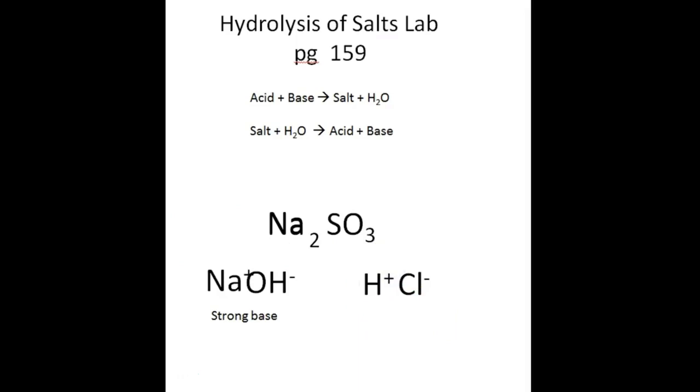Now, the Cl- is going to get H+, HCl. On our chart, HCl's got a Ka that's very large. It's a strong acid. A strong acid and a strong base together will make a very neutral solution. So our stuff's going to be neutral.